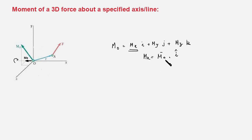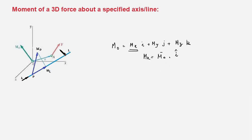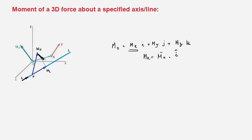Now we are asked to compute the moment of this force about the line L. Taking the moment about point O does not make sense here, but we can apply the same basic idea. We pick up any point on the line L — let's say point P — compute the moment of force F about point P, giving Mp, and then take the projection of this vector onto the line L, giving Ml. So Ml is the moment of force F about axis L.